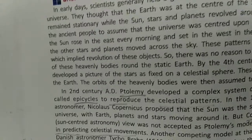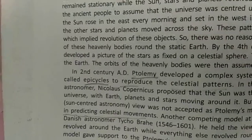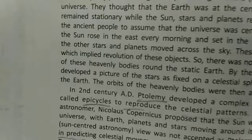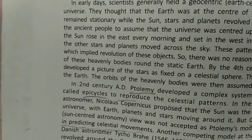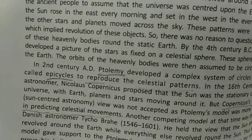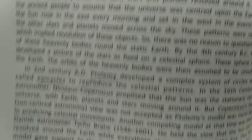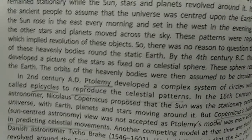By the fourth century BC, the Greeks had developed the picture of stars as fixed on a celestial sphere. This sphere rotated about the earth, and the orbits of the heavenly bodies were thought to be circular. In the second century AD, Ptolemy developed a complex system of circles within circles called epicycles to reproduce the celestial patterns observed.